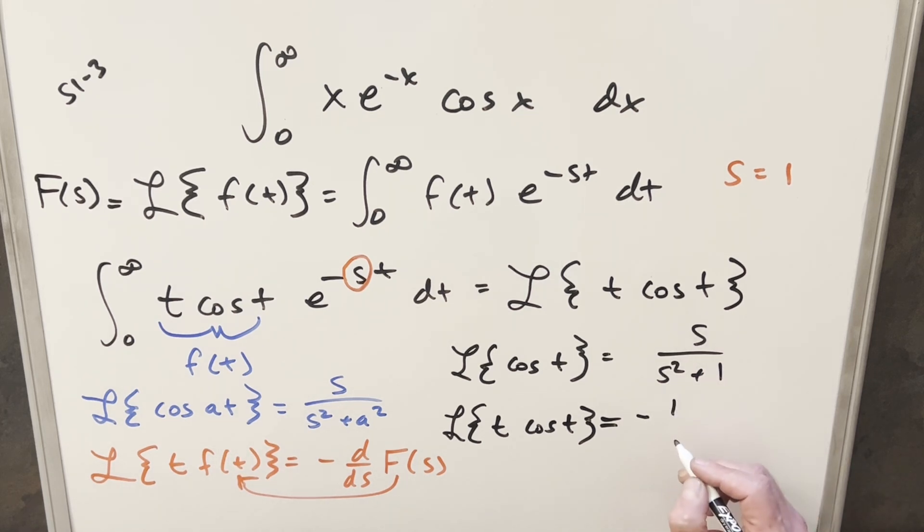So first, the derivative of the numerator is going to be just 1 times the denominator, so that's going to be s squared plus 1. Then minus the numerator, which is s, times the derivative of the denominator. That's going to give me 2s over the denominator squared, so we have s squared plus 1 all squared.